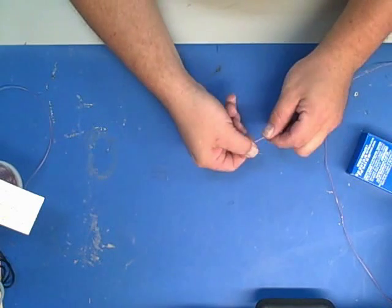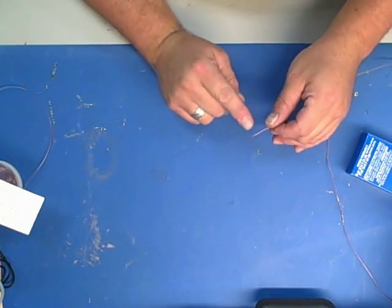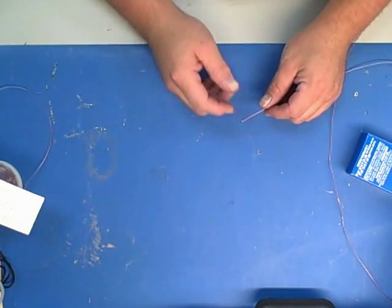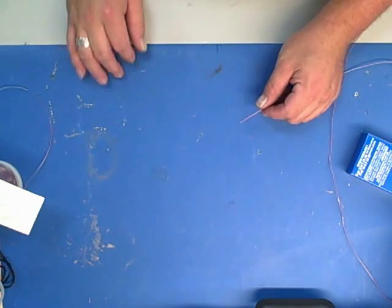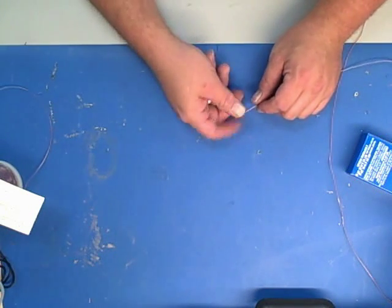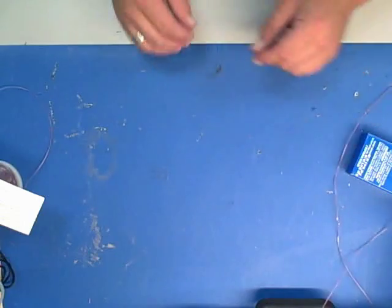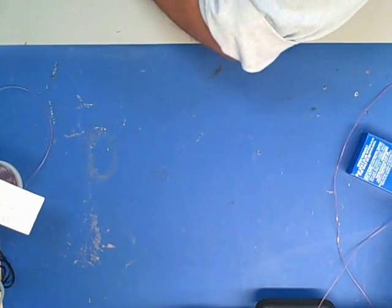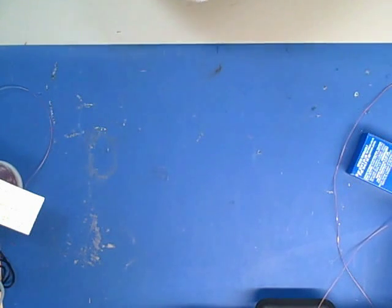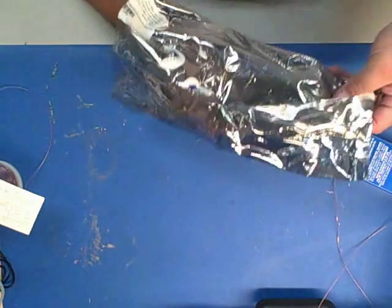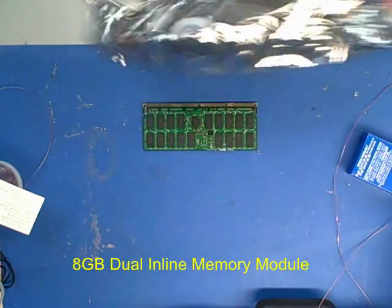Now, the reason why I smash this thermocouple flat is because what we're fixing to do with it now is we're going to superglue it onto a DIMM so we can do a thermal characterization of a set of DIMMs for a high-end server. So, let's go ahead and get a DIMM here.